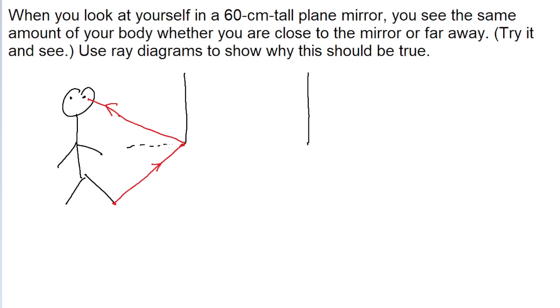I'm going to use a black dotted line to represent the horizontal. Now, the angle of incidence is the angle at which it hits the mirror. And the angle of reflection is the angle at which it leaves the mirror. According to the law of reflection, these two angles are the same.